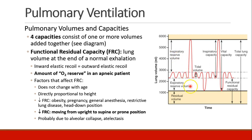These four volumes can be combined to create four lung capacities, each consisting of one or more volumes added together. The one we're going to focus on is the functional residual capacity, the FRC. This is the volume in the lungs at the end of a normal breath — your expiratory reserve volume and residual volume added together. At the end of a normal breath, the mechanics of your lungs are at equilibrium, with inward and outward elastic recoil equal to each other.